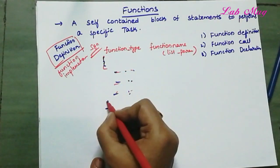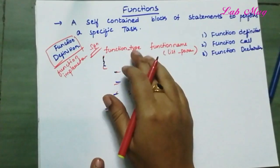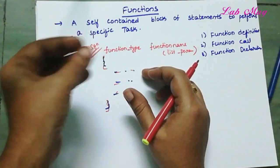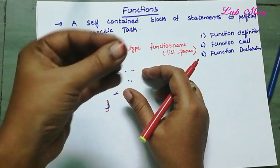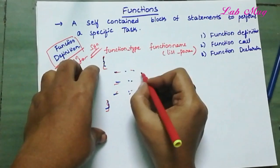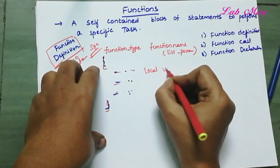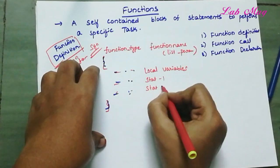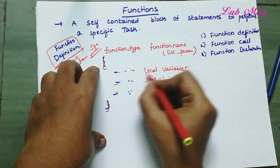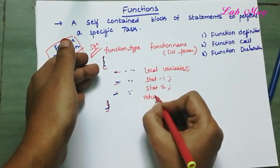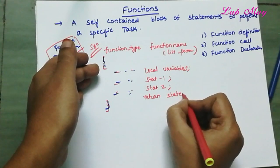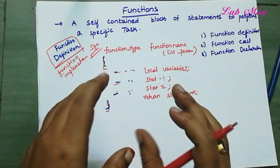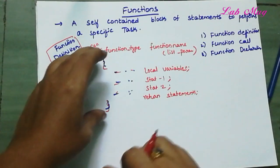Then opening brace, some coding, and closing brace. Inside the function body we have local variables, statements, and control structures. So the body contains local variables, then statements one, two, and so on. Then the return keyword is used to return some value. This is the general syntax.